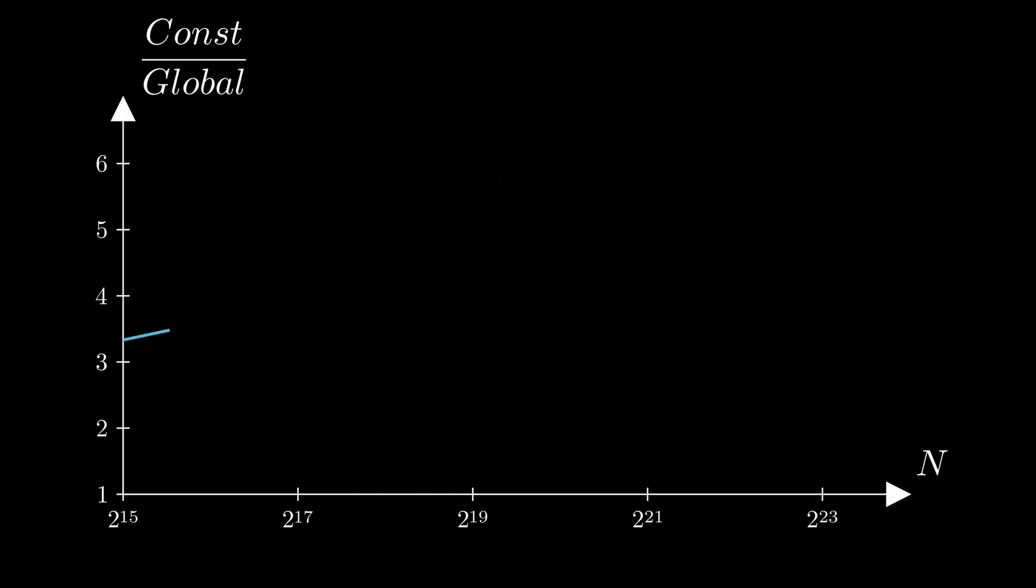If we look at the graph, we are getting a 3 to 6 times worse performance, even when all of the threads access a consecutive memory address.